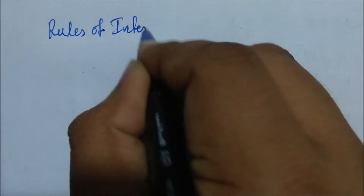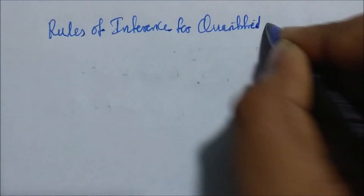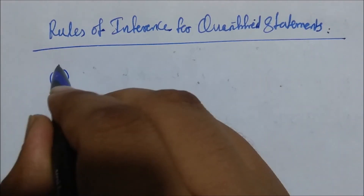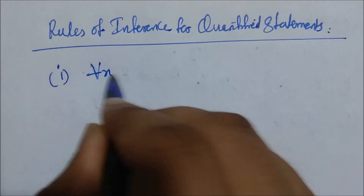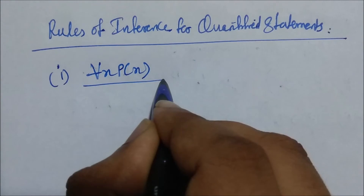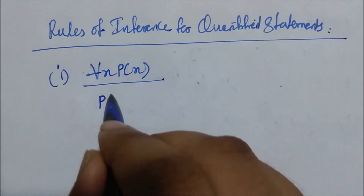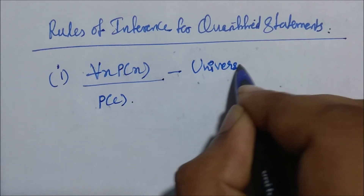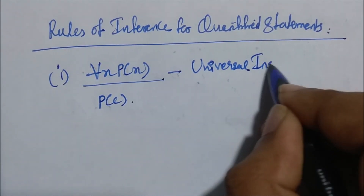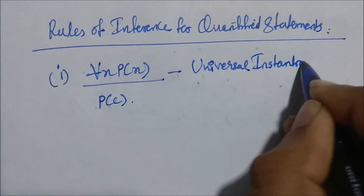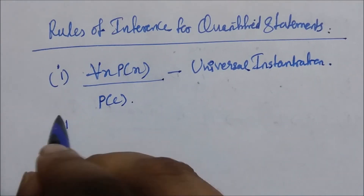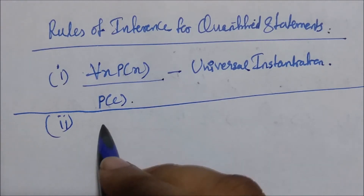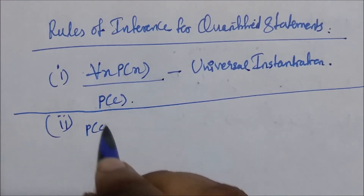Now let's see some rules of inference used for quantified statements. Suppose that for all X, P of X is true, which means for all values of X in the domain, P of X is true. If you take any arbitrary C from the domain of X, P of C is going to be true. So from 'for all X, P of X', we can conclude P of C is true for any arbitrary C. That is the rule of universal instantiation.